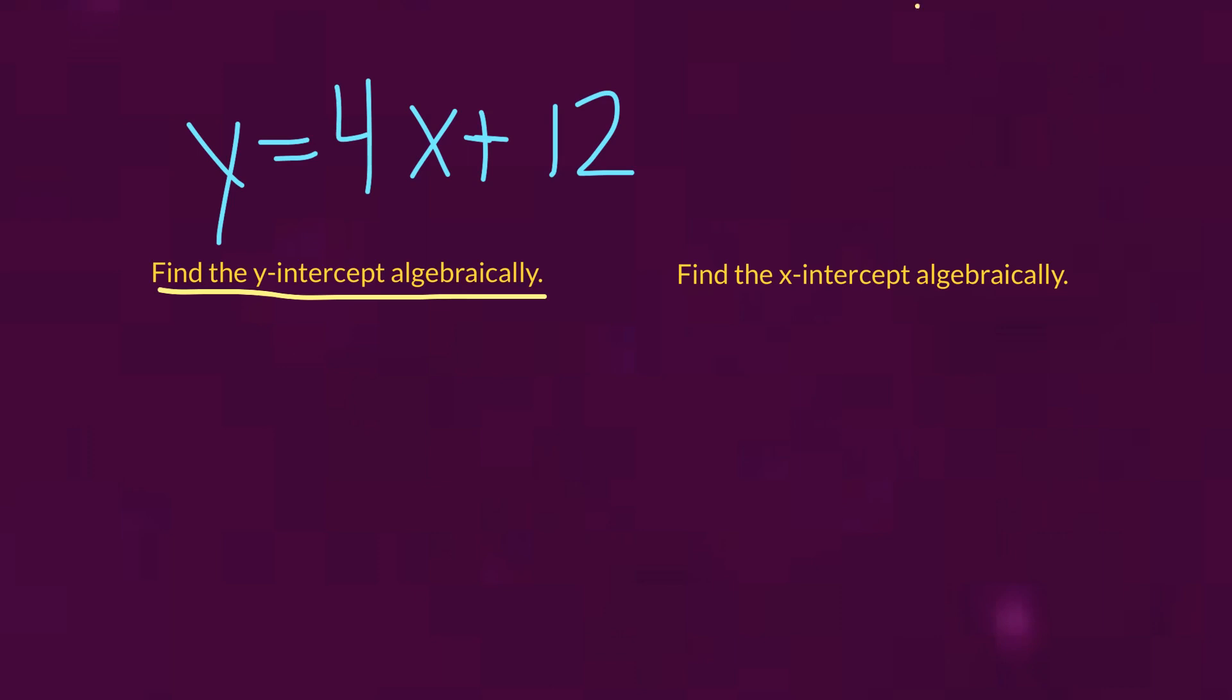So like I explained earlier, if you forget, try to visualize it. Y-intercept means that there's an x value of 0. So in our equation of y equals 4x plus 12, what we're going to do is we're going to actually replace x with 0. Because we know a y-intercept means that the x value is 0. So let's try it. So y is going to equal 4 times 0 plus 12. So all I've done is I've replaced x with 0.